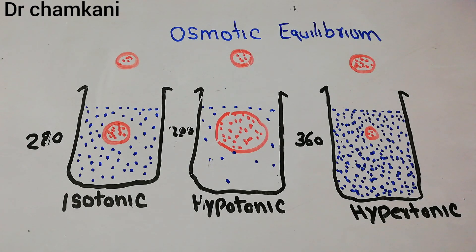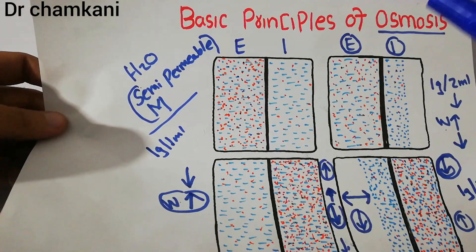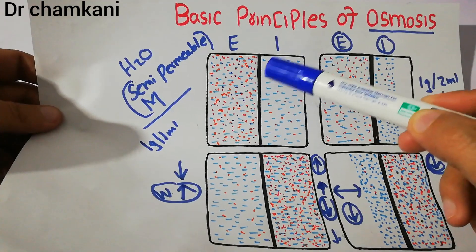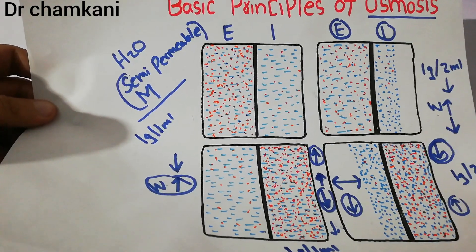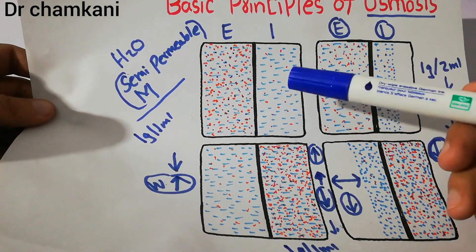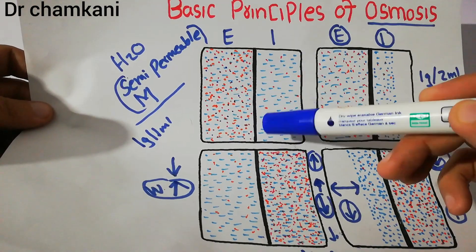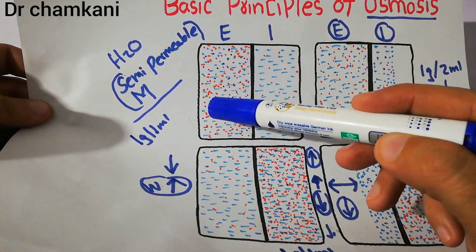Let's recall what we discussed in our last few lectures. We discussed osmosis, osmolarity and osmotic pressure. Osmosis is the movement of water from a region with high concentration of water to a region with low concentration of water across a semi-permeable membrane — a membrane which allows water to move but does not allow solutes to move. When there is movement of water from a region of low solute concentration to a region of high solute concentration, a pressure is generated.